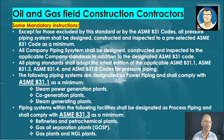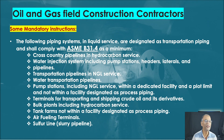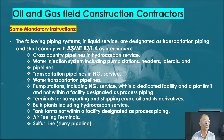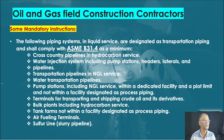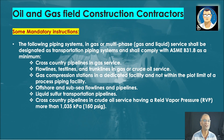Piping systems designed and constructed per B31.3 include refineries and petrochemical plants, gas-oil separation plants, gas plants, and NGL plants. Piping systems complying with ASME B31.4 include cross-country pipelines in hydrocarbon service, water injection systems including pump station headers and laterals, transportation pipelines in NGL service, water transportation pipelines, pump stations within a dedicated facility and within the plot limit but not designated as process piping, terminals for transporting and shipping crude oil and products, bulk plants including hydrocarbon service tank farms not designated as process piping, air fueling terminals, and sulfur lines.